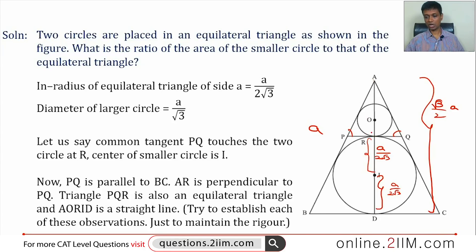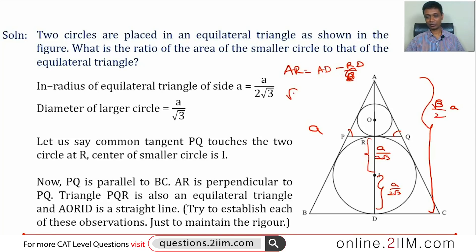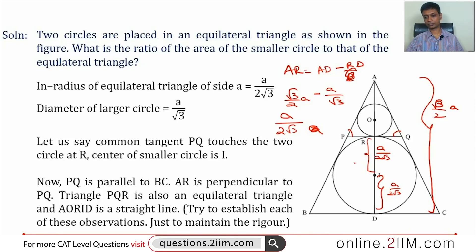AR equals AD minus RD. AD is (√3/2)a and RD is a/√3. So AR = (√3/2)a − a/√3. Taking LCM of 2√3: that gives (3a − 2a)/(2√3), which equals a/(2√3). So AR is a/(2√3).